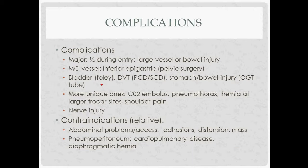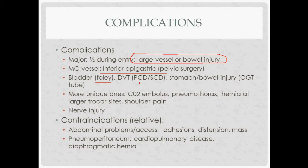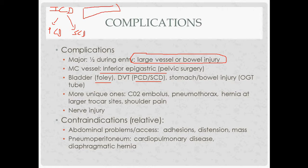Complications from laparoscopic abdominal access occur most commonly during initial peritoneal entry and pneumoperitoneum creation — specifically large vessel injury or bowel injury. The most common vessel injured by number is the inferior epigastric. General complications: reduce bladder injury with a Foley catheter; reduce DVTs with ICDs — either PCDs (pneumatic compression devices, one big chamber that squeezes all at once) or SCDs (sequential compression devices with chambers that fill sequentially from distal to proximal). Reduce stomach and bowel injury by placing an OG tube.